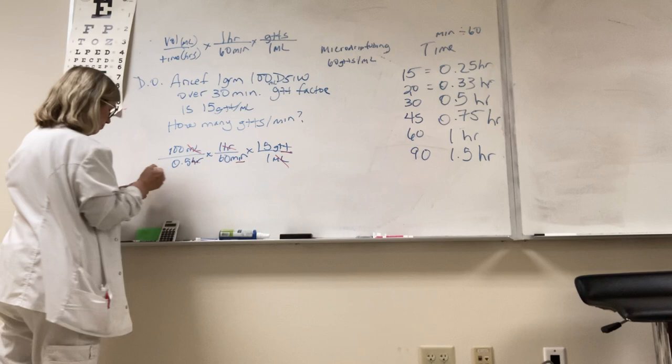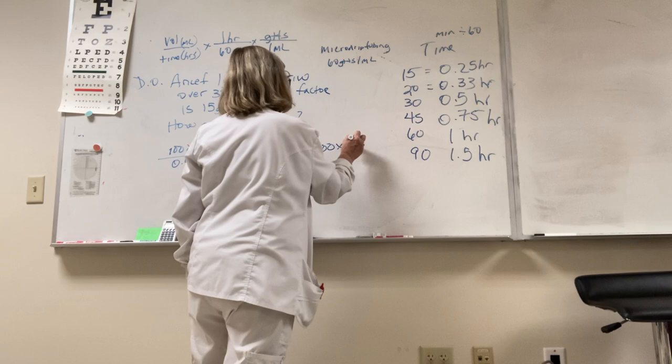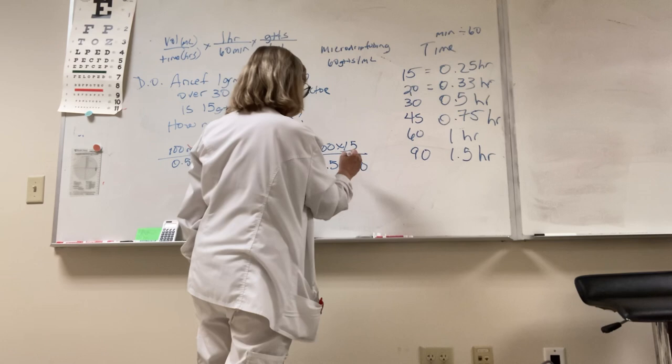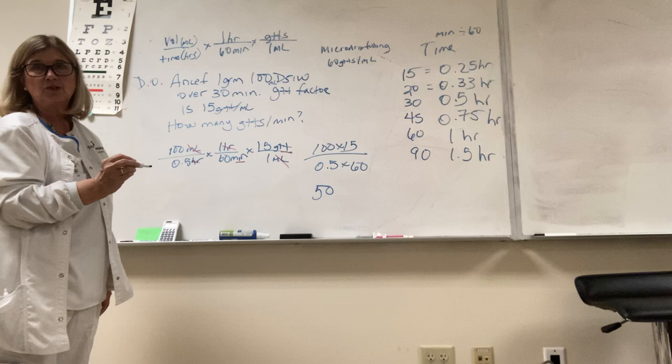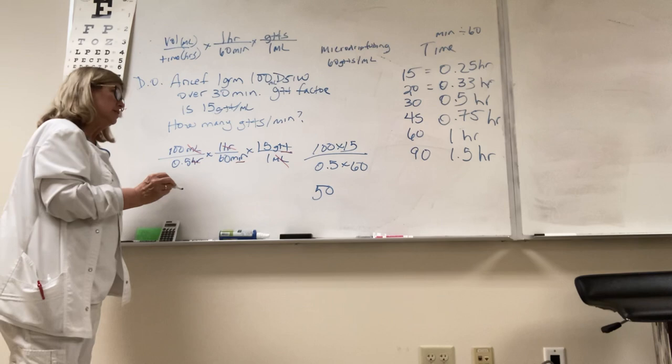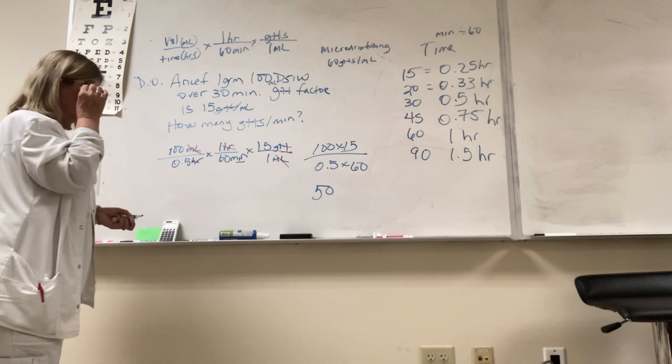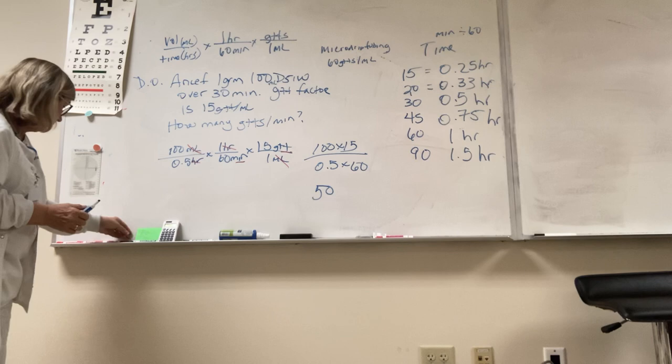So now I'm going to say 100 times 15 divided by 0.5 times 60. So I think you get 50. I set it up, so but again, always use your calculator, not your brain. This is a medicine going in and it could be a huge problem if you don't calculate it correctly.